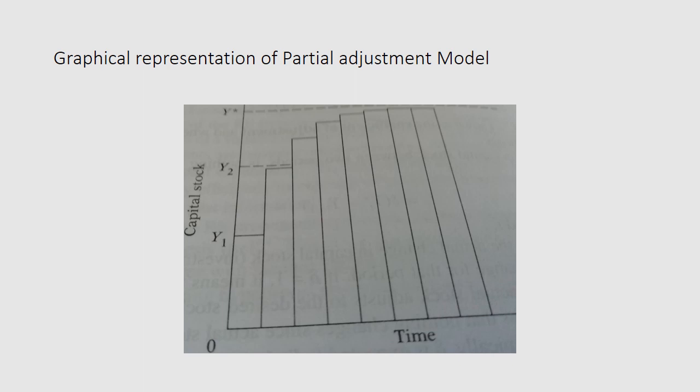The partial adjustment model can also be represented graphically. As referenced from Gujarati, in this figure y_star is the desired capital stock and y1 is the current actual capital stock. Assuming delta equals 0.5, this implies the firm plans to close half the gap between the actual and desired stock of capital each period. In the first period it moves to y2, and investment equals y2 minus y1, which in turn equals half of (y_star minus y1). In each subsequent period it closes half the gap between the capital stock at the beginning of the period and the desired capital stock y_star.